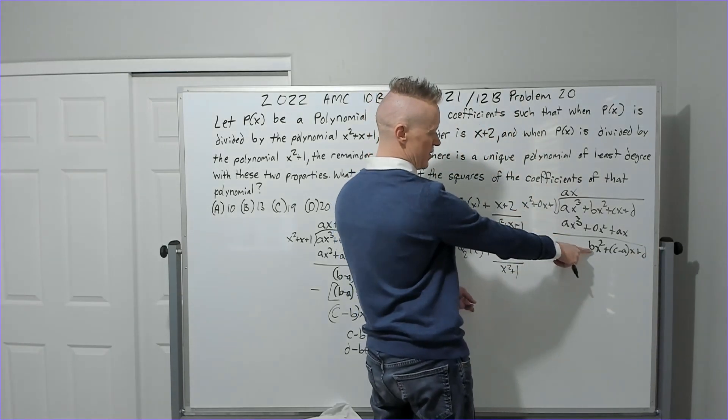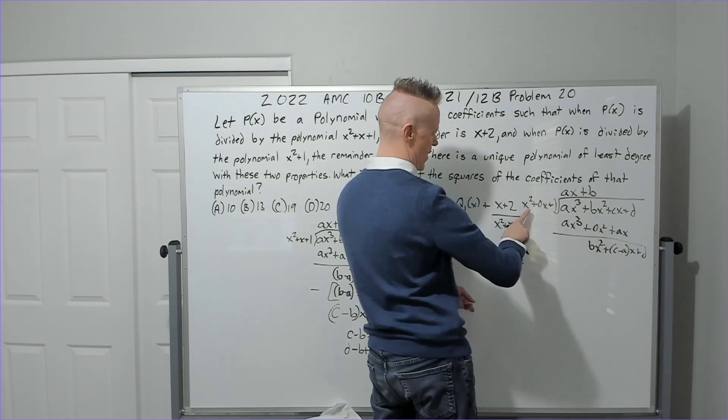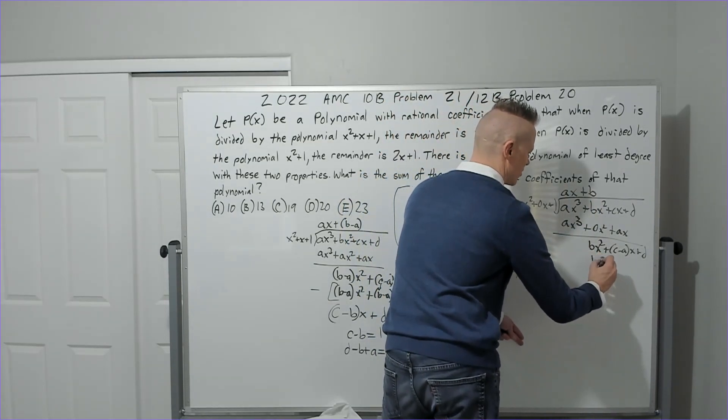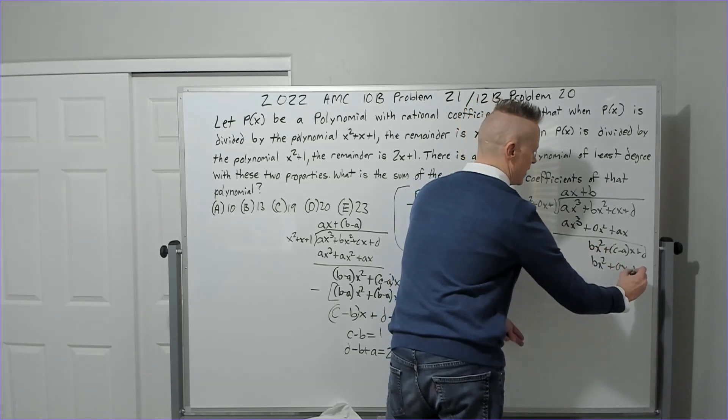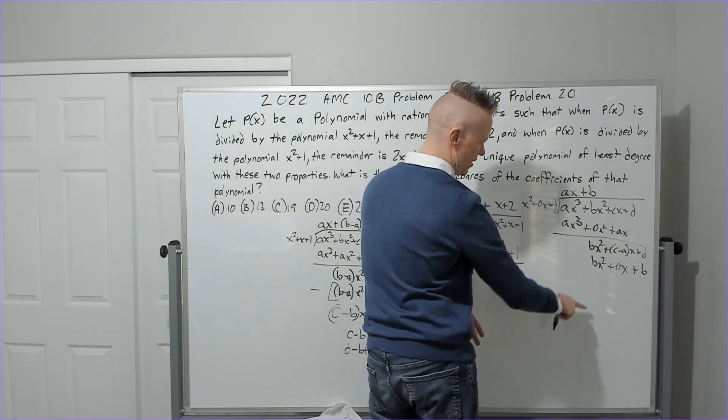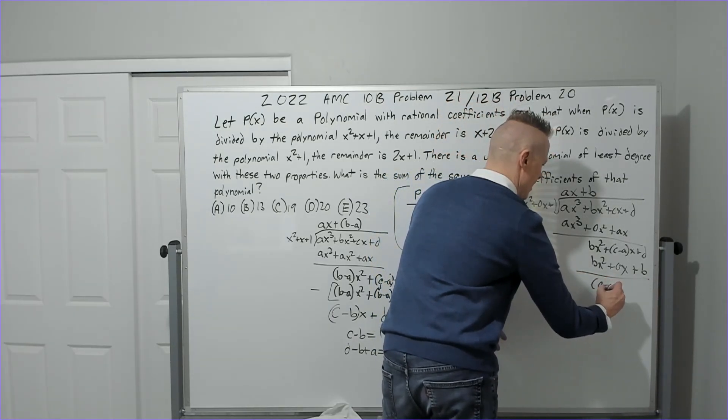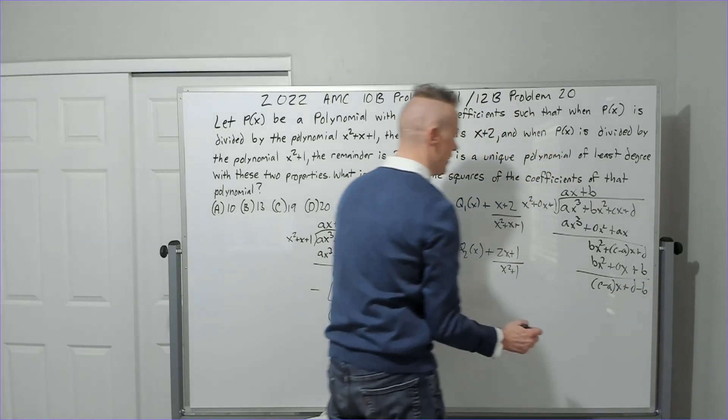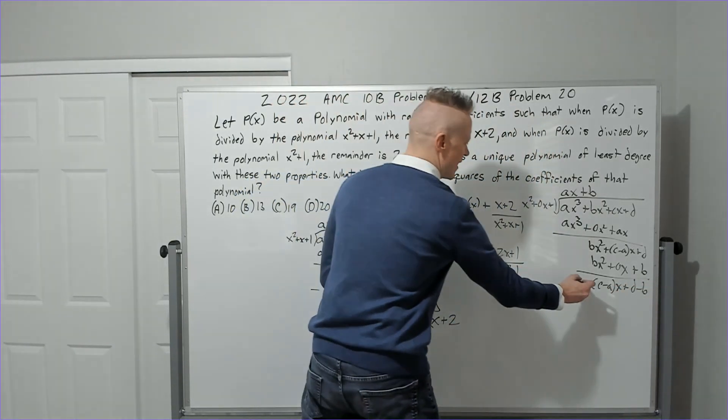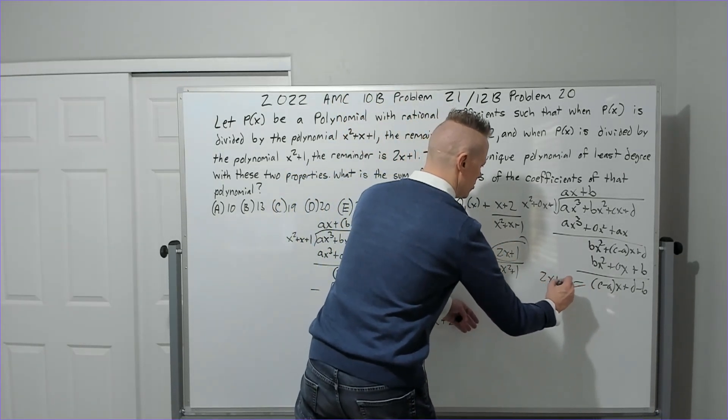Here you'll get bx squared plus (c minus a)x plus d. Now what? x squared times what? b. So we're going to put b here. b back distributed is bx squared plus 0x plus b. Now when you subtract, you're going to get (c minus a)x plus (d minus b). And what does that need to equal? That needs to equal this remainder here, which is 2x plus 1.